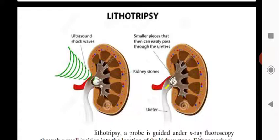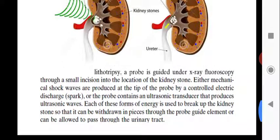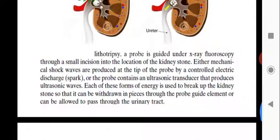Ultrasound shock waves break the stone into small pieces that can easily pass through the ureter and then through the urine. In lithotripsy, a probe is guided under x-ray fluoroscopy through a small incision to the location of the kidney stone. Either mechanical shock waves are produced at the tip of the probe by a controlled electric discharge spark, or the probe contains an ultrasonic transducer that produces ultrasonic shock waves to break up the kidney stone so it can pass through the urinary tract.